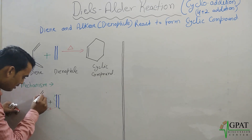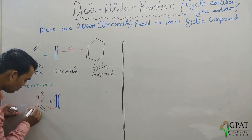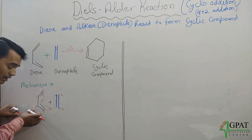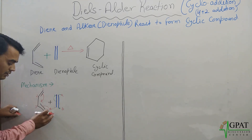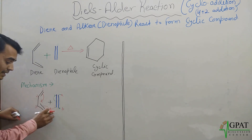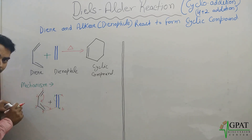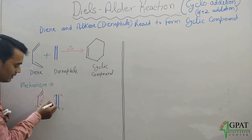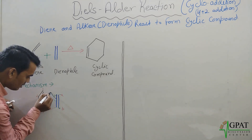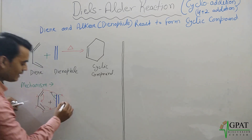Now, if I number the carbons: this is one, two, three, and four, and the dienophile carbons are a and b. The pi bond between carbon three and four shifts and forms a new sigma bond between carbon four and carbon b. When this happens, the pi bond between carbons one and two shifts toward carbons two and three. Then the pi bond between a and b shifts and forms a new sigma bond between carbon one and carbon a.